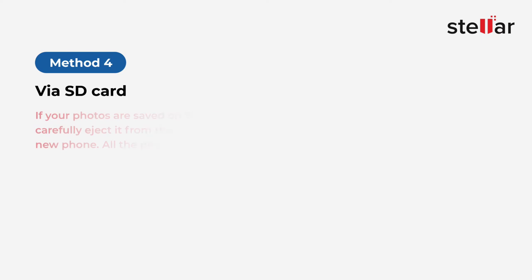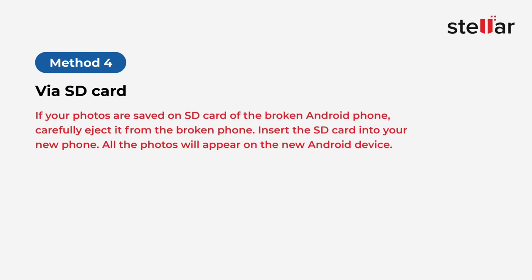Method 4: Recover Photos via SD Card. If your photos are saved on the SD card of the broken Android phone, carefully eject it from the broken phone. Insert the SD card into your new phone. All the photos will appear on the new Android device.